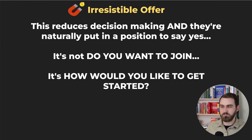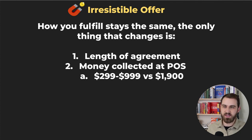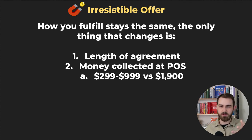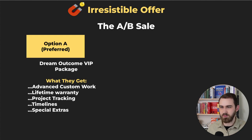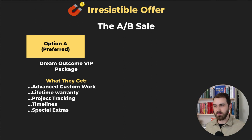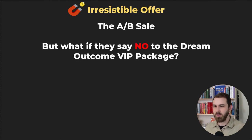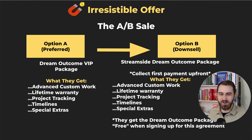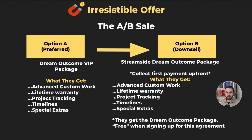It's not 'do you want to join?' — it's 'how would you like to get started?' How you fulfill stays the same; only the length of the agreement and money collected at point of sale changes — for example, payments versus pay in full. The A option is the VIP package: advanced custom work, lifetime warranty, project tracking, timeline, and special extras. If they say no, the B option is the streamlined dream outcome package, collected upfront, which includes the dream outcome package free when signing up.